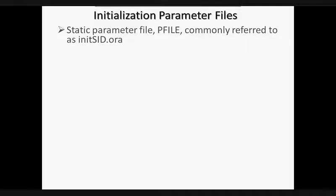Two types of initialization parameter files exist. The first one is the static parameter file, commonly referred to as init-sid.ora, where the SID is our database SID. The pfile is a text file that can be maintained using an operating system editor like Notepad or vi-editor. The parameter file is read only during instance startup. If the file is modified, the instance must be shut down and restarted in order to make the new parameter values effective.